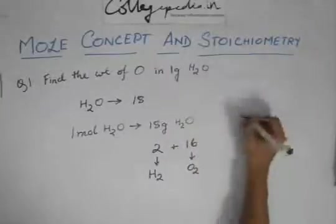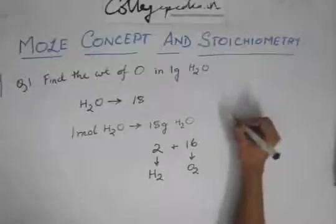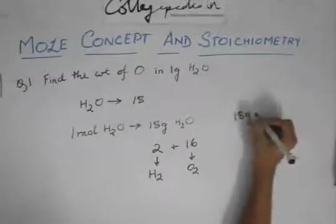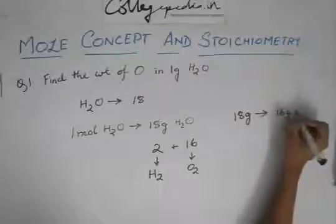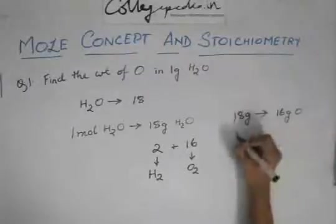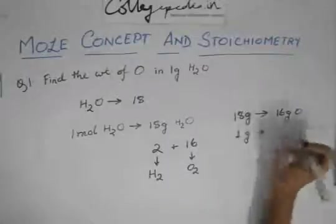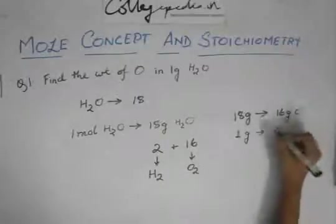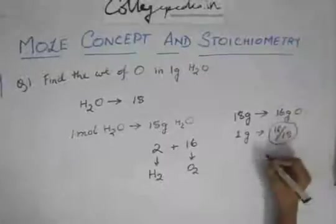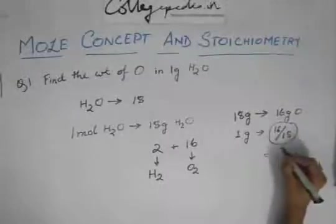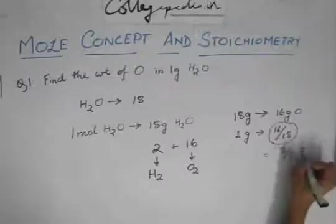So again, applying this simple unitary method, you can say that 18 grams of water contains 16 grams of oxygen. So 1 gram of water will contain how many grams of oxygen? 16 by 18, which is nothing but 8 by 9 grams.